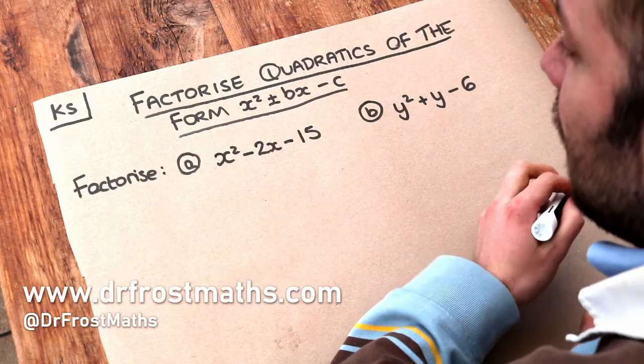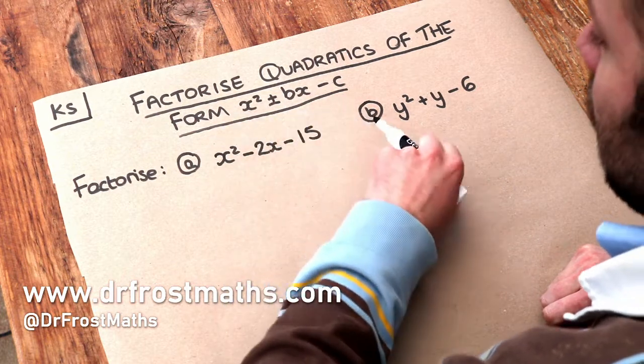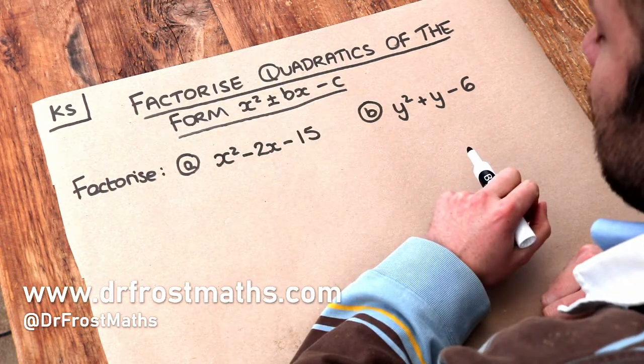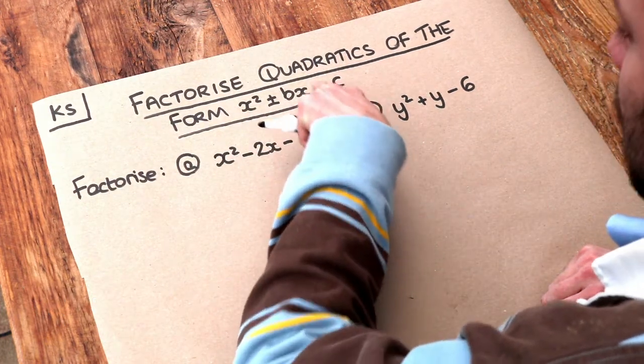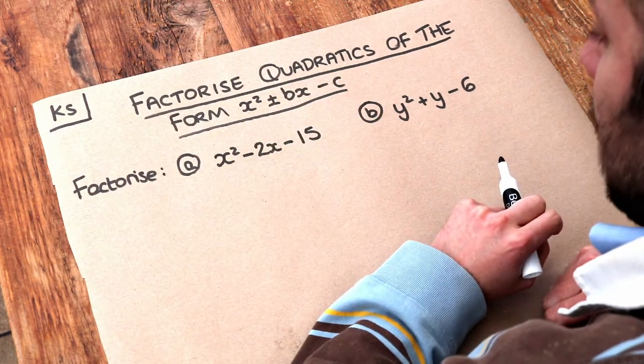Hello and welcome to this Dr Ross Mass key skill video on factorising quadratics of the form x squared plus or minus bx minus c. In particular, this final term or the constant term as it's called is going to be negative, and this middle term might be positive or negative.